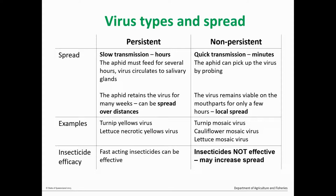In comparison, non-persistent viruses are picked up when the aphid probes the plant — it doesn't actually need to feed. The virus is picked up on the mouthparts, so transmission can be very quick, as little as about 30 seconds. This also means the virus isn't retained in the insect, so it easily loses the virus if it probes again. These types of viruses therefore tend to only be spread locally.